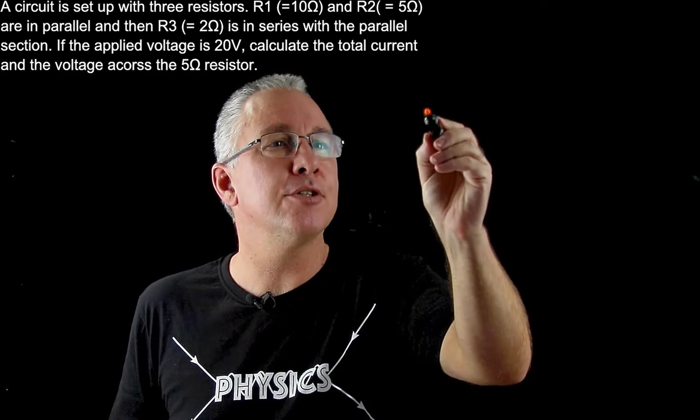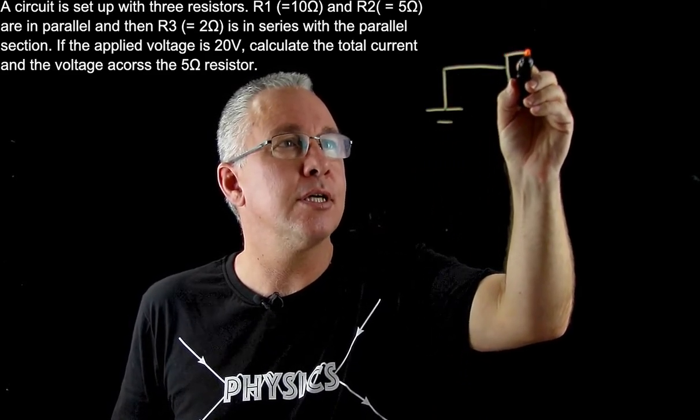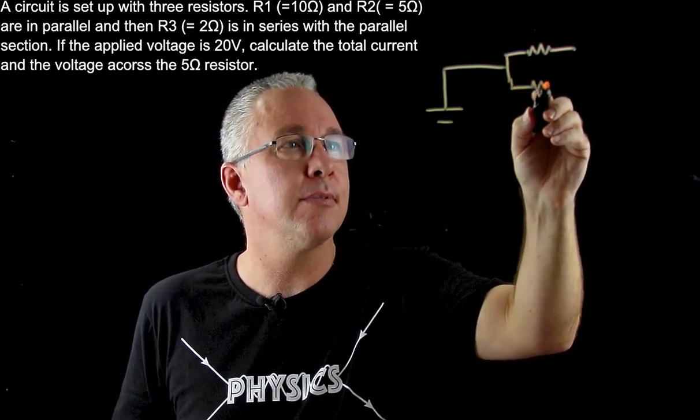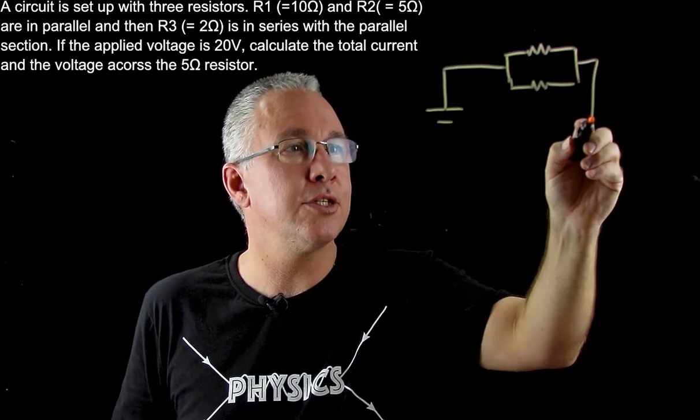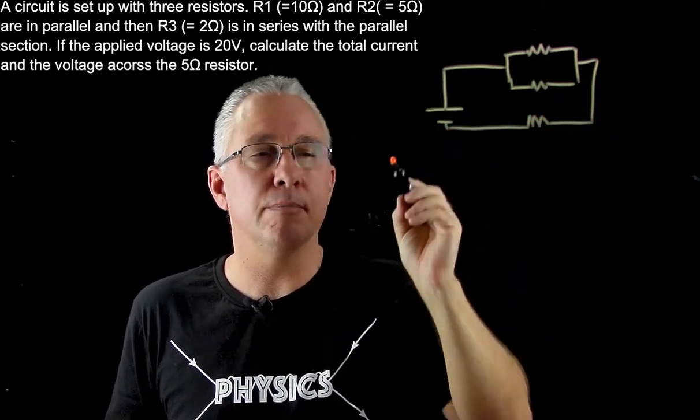So we have a voltage supply, and then we're told we have a parallel section which is made up of two resistors. Then this parallel section is put into series with another resistor, and then we complete the circuit.